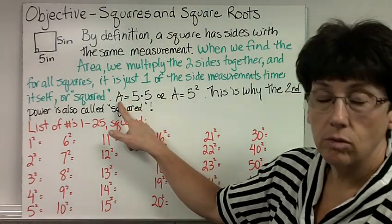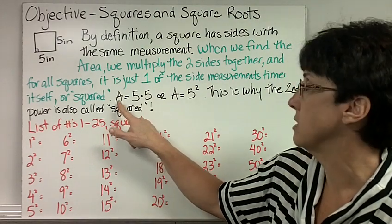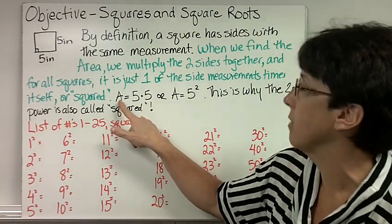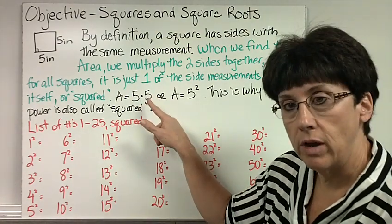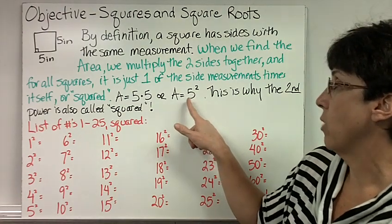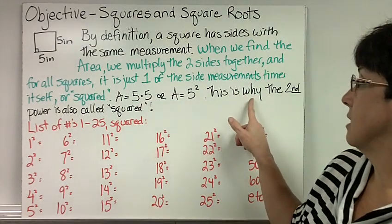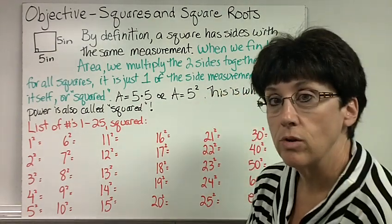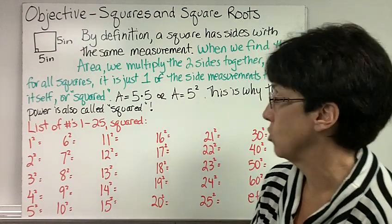So if I were going to write down the formula to figure out how to find the area for this, I would say this isn't the formula, this is the math. Area equals 5 times 5. But remember from our exponent work that we can rewrite that as 5 squared. And so I could call this A equals 5 to the second power, or A equals 5 squared. And that's why the second power is also called squared, because it all came back to finding the area of a square.